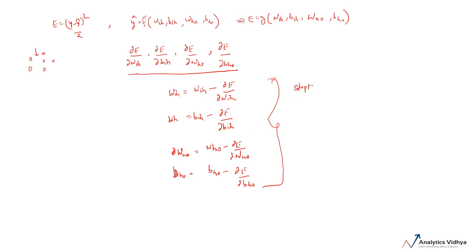We repeat this process until a stopping criterion is reached — for example, when the error is no longer decreasing upon subsequent updates, or when the maximum number of iterations has been reached. There can be many stopping criteria you can define. This is the gradient descent algorithm for neural networks. The key question now is: how do we calculate these four gradient values? This is where the next algorithm, called backpropagation, comes in — it is the heart of how neural networks are trained.